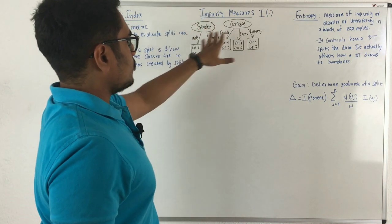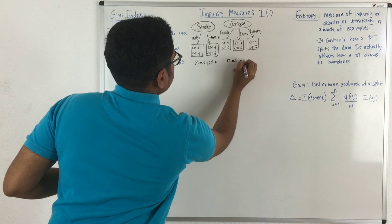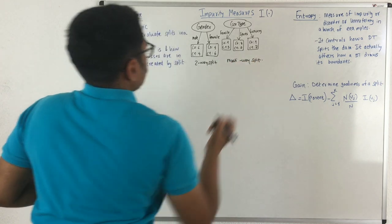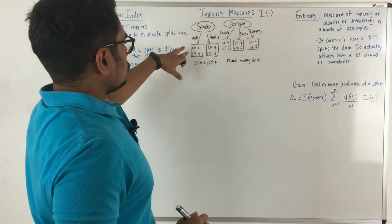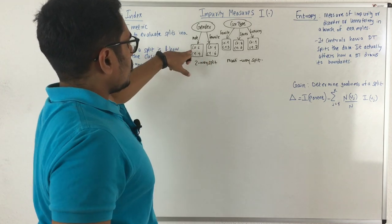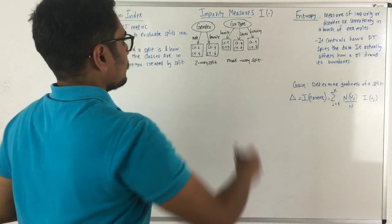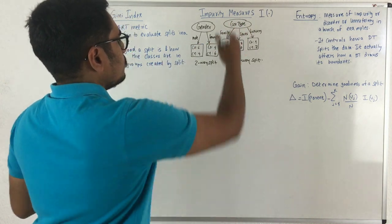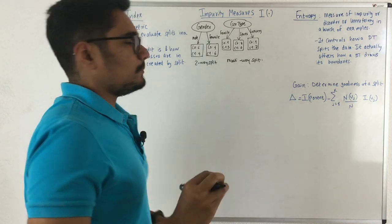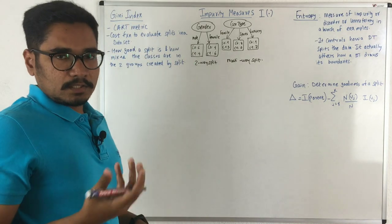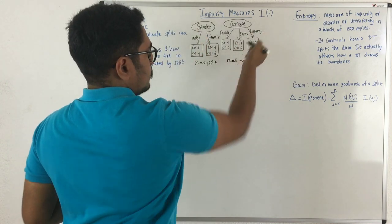Consider these two types of splits: a two-way split and a multi-way split. For the attribute gender with two values — male and female — this is a class distribution with 10 instances: in class C0 you have 6 males, in C1 you have 4 males, in C0 you have 4 females, and in C1 you have 6 females. Similarly, the car type attribute has three values: family, sports, and luxury, with their own class distributions. The Gini index determines how good a split is and how mixed the classes are in the groups created by the split, with separate Gini index values for each.